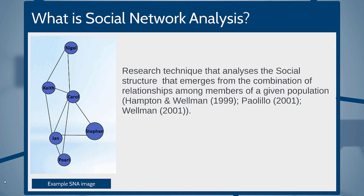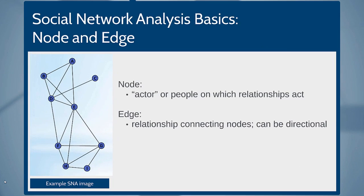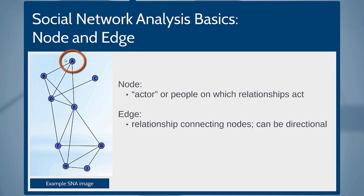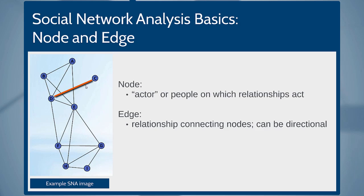Now let's get into some more details on social network analysis. The formal definition is that it is a research technique that analyzes social structures that emerge from a combination of relationships. If you look at the image on the left, you'll see an overview with some names borrowed from the School of Tourism and the connections that may exist among them. We have two elements we look at: nodes — the entity, in this case actors or individuals on which a relationship acts — and the edge, which are the connections or relationships that connect these nodes. It can be directional if we have a directed graph, or undirected if we have an undirected graph.